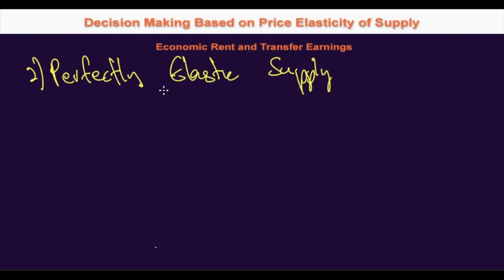In this video we are going to discuss the concept of economic rent and transfer earnings for perfectly elastic supply. It is almost impossible to find a real life example for perfectly elastic supply. The closest we can get is the labor market for fast food chain restaurants, as the skills required are almost identical.